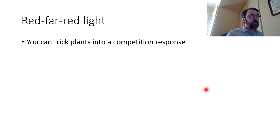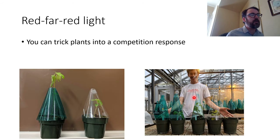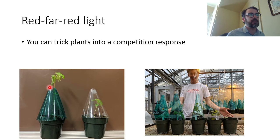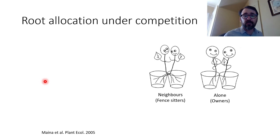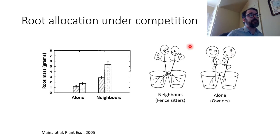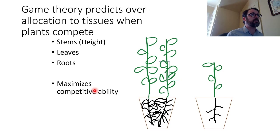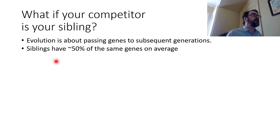You can trick a plant into this competition response in the lab by filtering more and more red light. We've seen how plants over-allocate to height and leaf production in order to shade their competitors. Plants do this below ground too — in this experiment, plants sharing a pot versus alone below ground but still shading each other above ground almost doubled their reproduction in the presence of a neighbor, trying to hurt their neighbor. Game theory predicts this over-allocation: plants should get taller, make more leaves to create shade, and make more roots to steal nutrients, maximizing competitive ability.